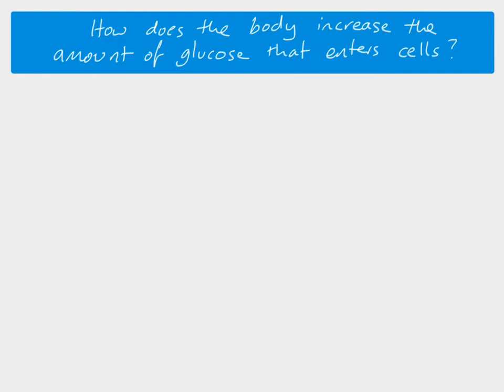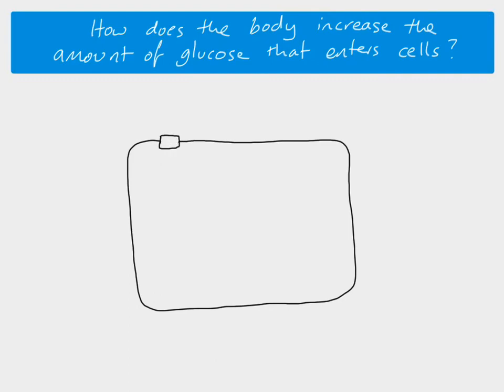Beyond increasing glycogenesis and respiration, insulin can also increase how much glucose enters cells in the first place. This only occurs in muscle cells, which have insulin receptors and channel proteins in their membrane called GLUT4 proteins. GLUT4 proteins are what glucose passes through to get into or out of muscle cells. To increase glucose uptake, we can increase the number of GLUT4 proteins in the cell surface membrane.